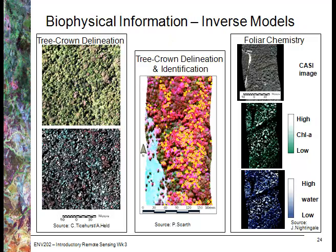This is a similar example looking at estimating the amount of chlorophyll and water content in tree crowns. This is done by the same process — understanding chlorophyll and water absorption and how amounts of chlorophyll and water affect the amount of light absorbed at specific wavelengths. That understanding is used to develop an equation that can be plugged back into the image to create a map of that information.